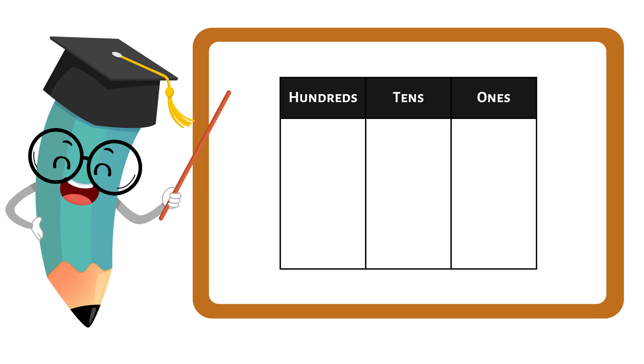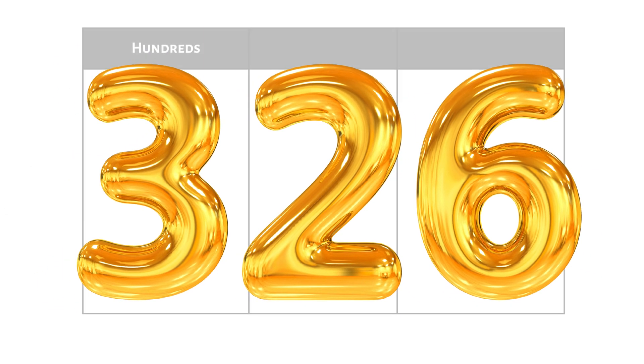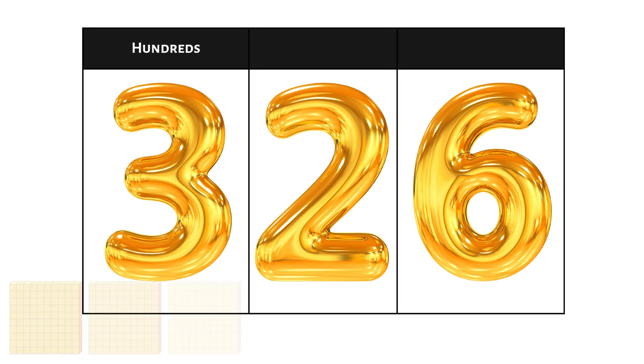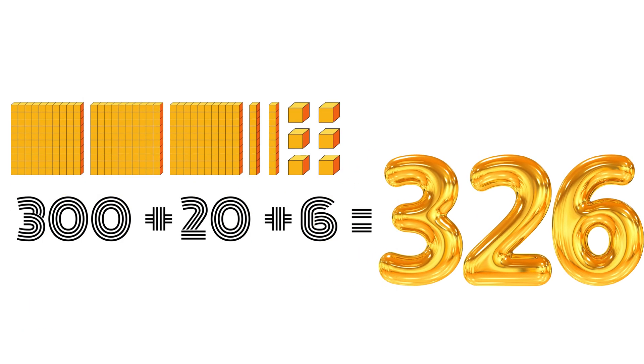But here's where it gets really cool. Look at this number, 326. The three is in the hundreds place, so we have three groups of 100. The two is in the tens place, so we have two groups of 10. And the six is in the ones place, so we have six individual ones. When we put it all together, we get 300 plus 20 plus 6, which equals 326.